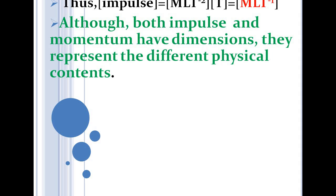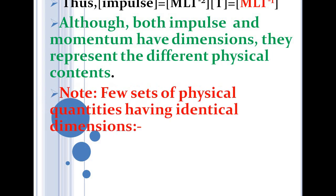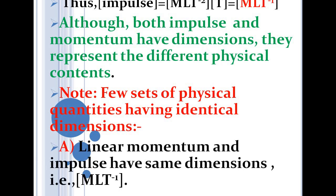So we cannot say that even if two quantities have the same dimension, they represent the same physical quantity. Let's see some more sets of physical quantities having identical dimensions. The first set: linear momentum and impulse both have dimension MLT⁻¹.